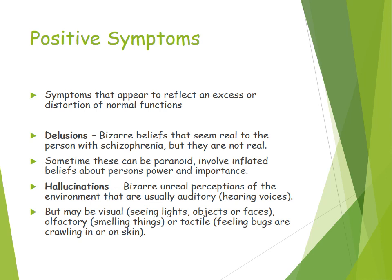Hallucinations are unreal perceptions in the environment. Typically they are auditory — hearing voices — but they could also be visual, so the person might see lights, objects, or faces. They might smell things that aren't there, and they can also be tactile. One common example is feeling like bugs are crawling on or in their skin.